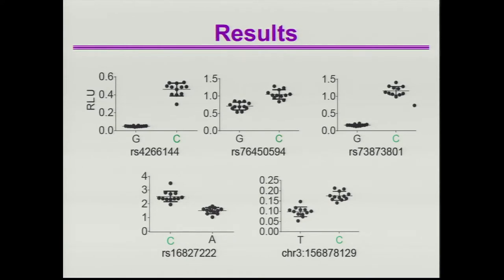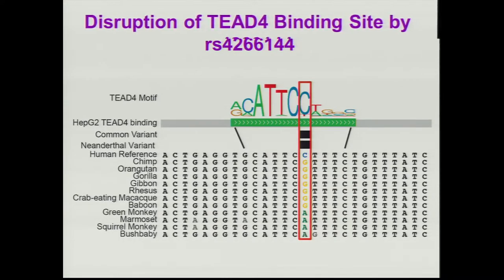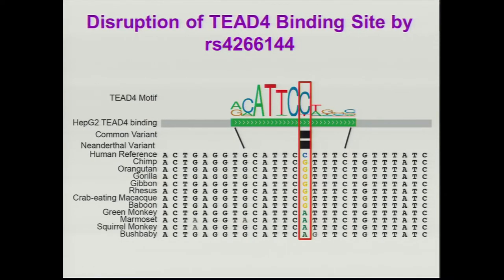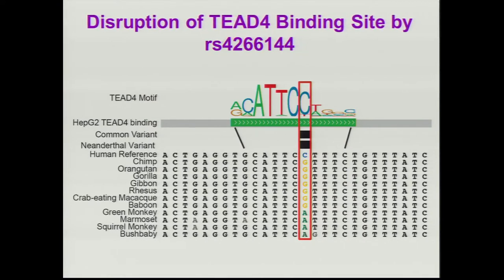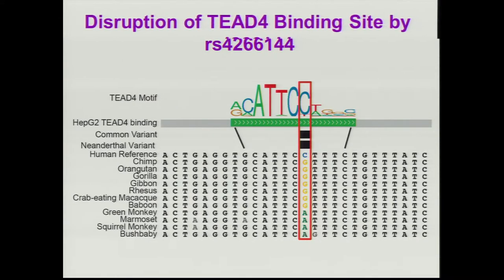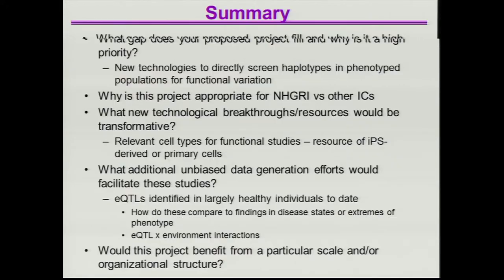Looking at one of these alleles, RS4266144, it overlaps a TBP4 binding site. There's a G allele and a C allele; the C allele had the higher level of expression. The ancestral allele appears to be the G allele, as reflected by other non-human primates. The G allele is more common in humans as well, albeit it's about 50-50 — a relatively common variant. The Neanderthal variant was also a G allele. This allows us to hone in on this particular site as one that may be important for the phenotype we're interested in.